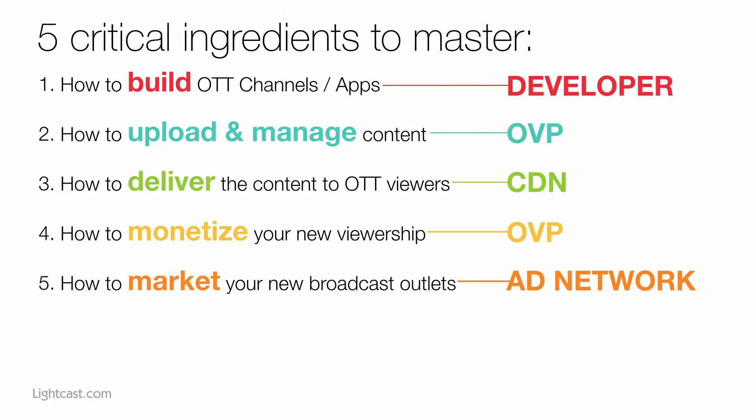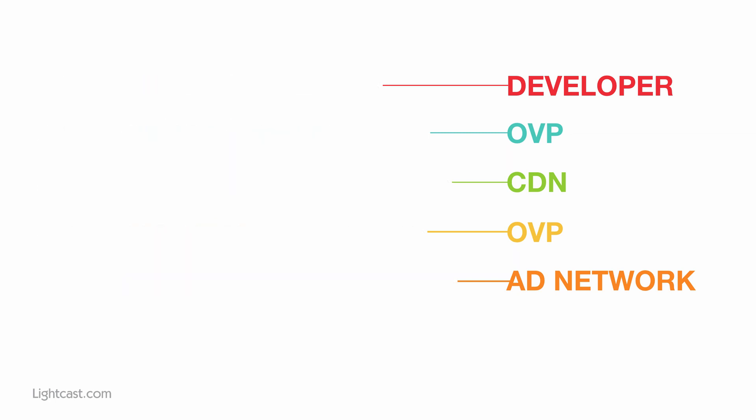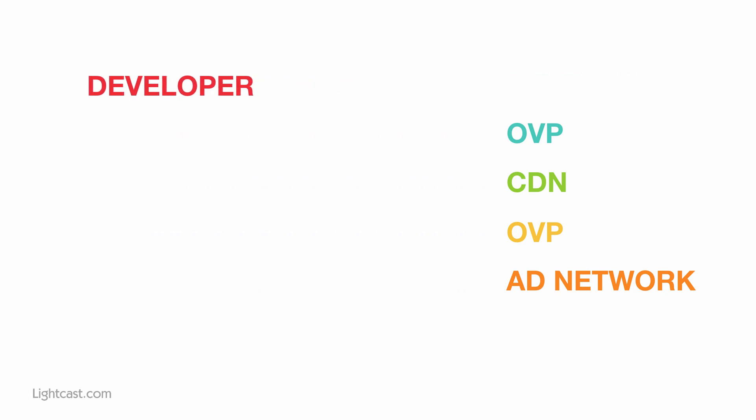Here are the five critical ingredients to master: how to build OTT channels and apps — you need app developers; how to upload and manage content — you need an OVP with an intuitive media management system; to deliver content to your viewers, you need CDNs; to monetize your viewership, you need an OVP that provides all those monetization tools; and to market new broadcast outlets, leverage video ad networks to run ad campaigns on other established OTT properties.